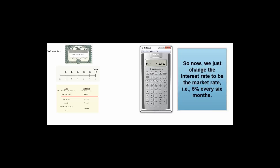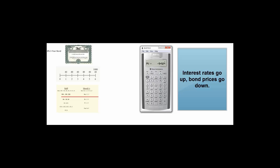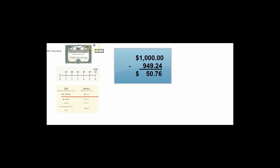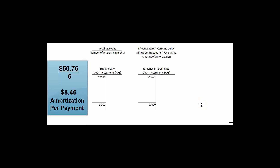We require a 10% return per year — that's 5% every six months. So we enter 5% for I, compute PV, and we learn that we should pay $949.24 to buy this bond. $1,000 minus $949.24 is $50.76 worth of discount. We should also include brokerage fees, but let's pretend my brother-in-law sold me the bond and didn't charge any. Under the straight-line method, it's simple: take that $50.76 discount and divide it by six, because there are six interest payments between now and maturity.